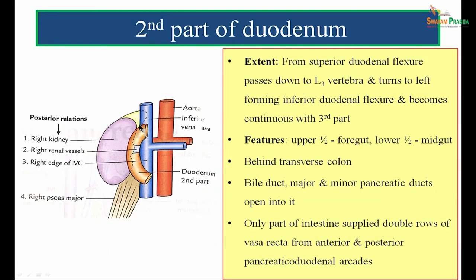Moving on to the second part of the duodenum: it extends from the superior duodenal flexure, passes down to L3 vertebra, and turns to the left forming the inferior duodenal flexure, becoming continuous with the third part. The upper half of the second part, up to the opening of the major duodenal papilla, develops from the foregut; the remaining lower half develops from the midgut. It lies behind the transverse colon. The bile duct and the major and minor pancreatic ducts open into the interior of the second part. It is the only part of the intestine supplied by two rows of vasa recta arising from the anterior and posterior pancreaticoduodenal arcades.